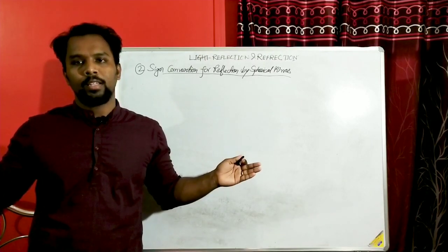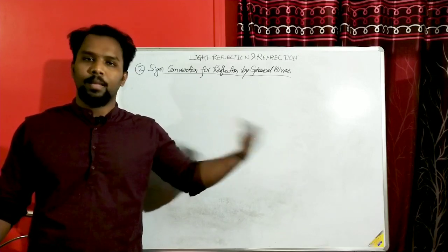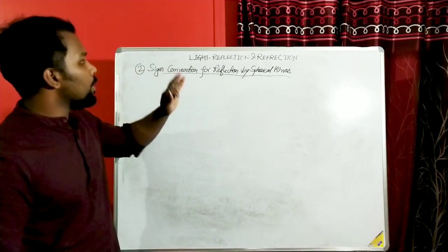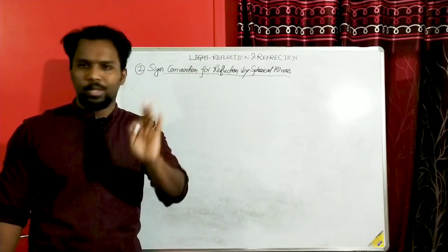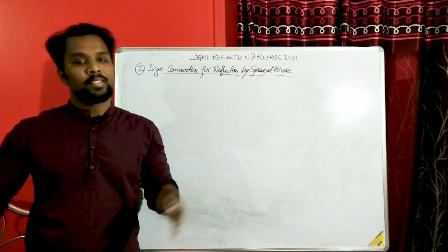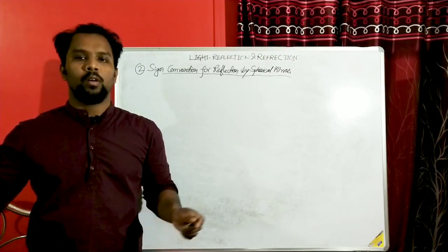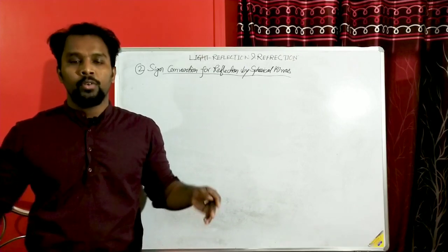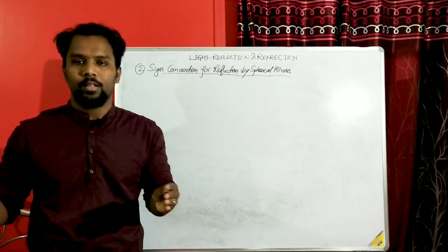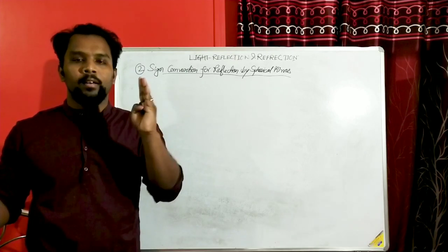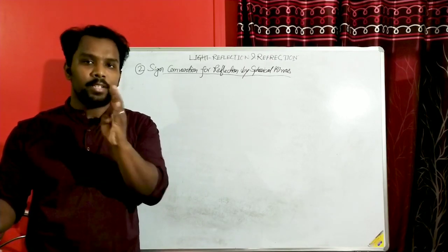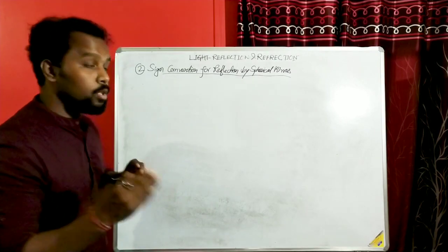In case of image formation in spherical mirrors — both concave and convex — sometimes the image forms on the left side and sometimes on the right side of the mirror. That means there is a direction, so there will be a positive and negative sign depending on the direction of image formation and object position. We will see how it actually works.